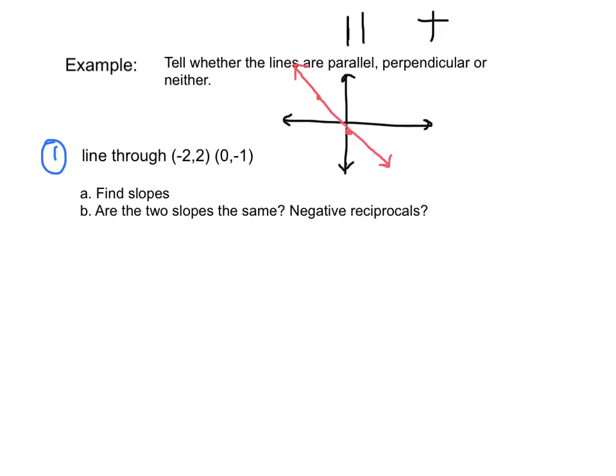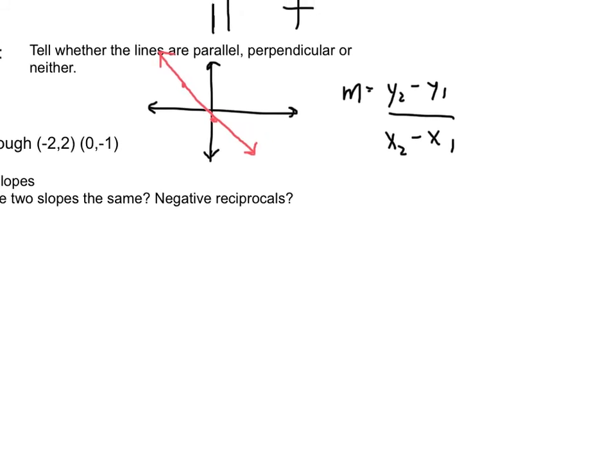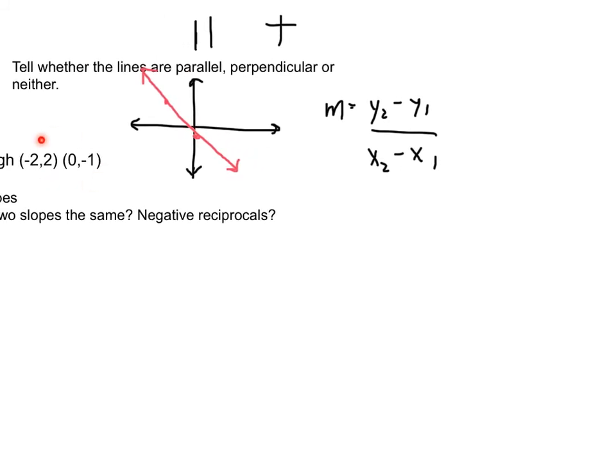So, first we need to find the slopes. This is, once again, using our slope formula, which, a reminder, is y sub 2 minus y sub 1 over x sub 2 minus x sub 1. So, we are going to plug in our two values over here, don't forget about those, and find these slopes, as it is our first step. So, we are going to plug in negative 1 minus 2, and then, we have 0 minus negative 2. So, we have negative 3 over 2, which is the slope of our first line.